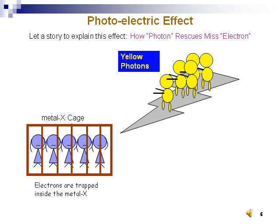Yellow photon had tried many methods, including his friends, also called yellow photons, to bring the girl out. But they failed.